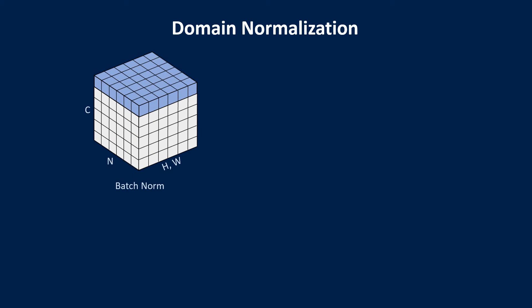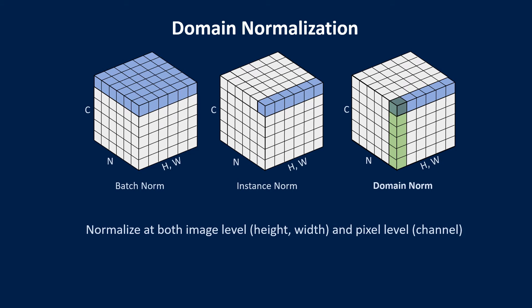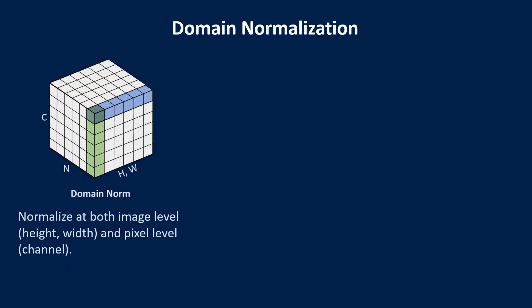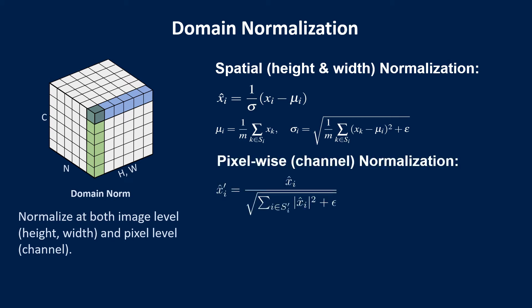The widely used batch normalization cannot handle image-level domain variations. Instance normalization can remove image-level style differences, but cannot handle domain-sensitive local variations and contrast. Our domain normalization normalizes features at both image level and pixel level. Specifically, we normalize at image level — the same as instance normalization — and also normalize pixel-wise feature vectors. This pixel-wise normalization makes the model more robust to domain-sensitive local variations and contrast.